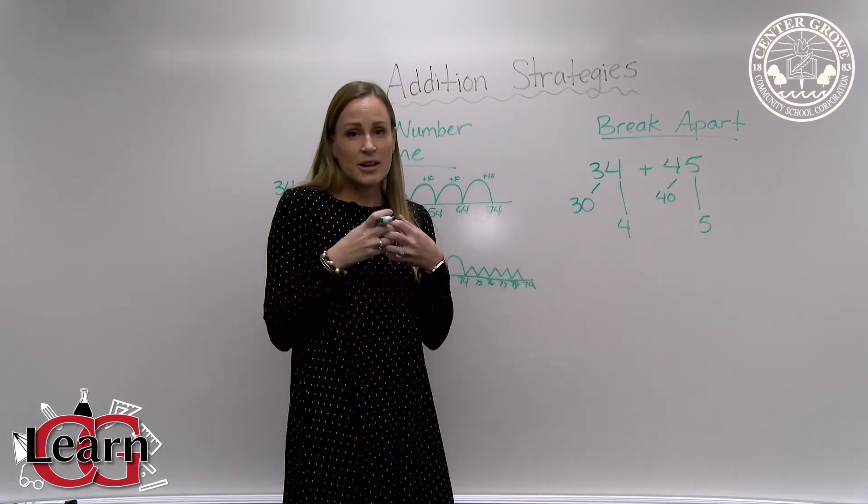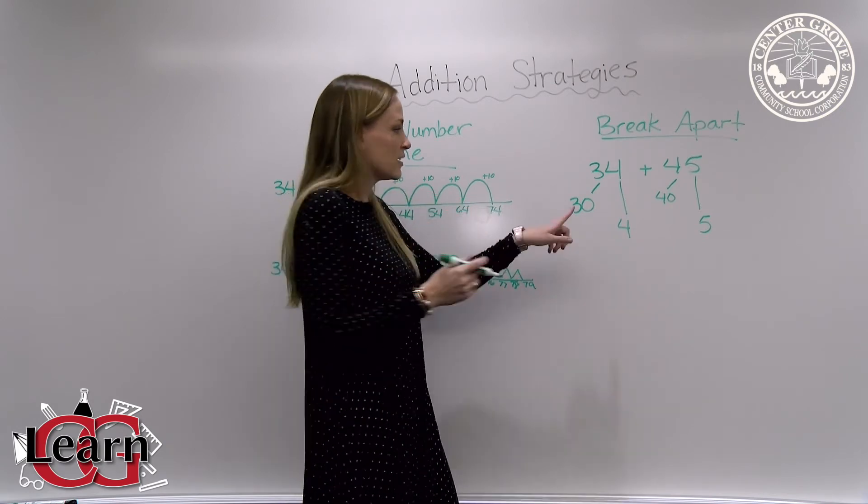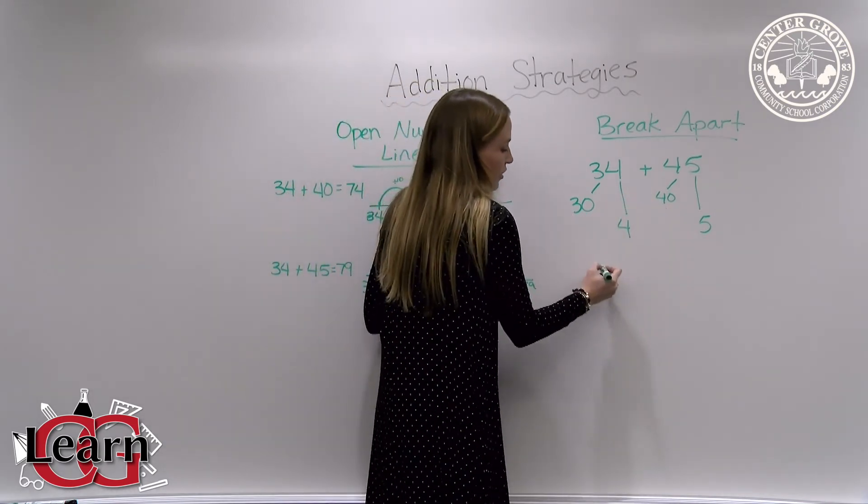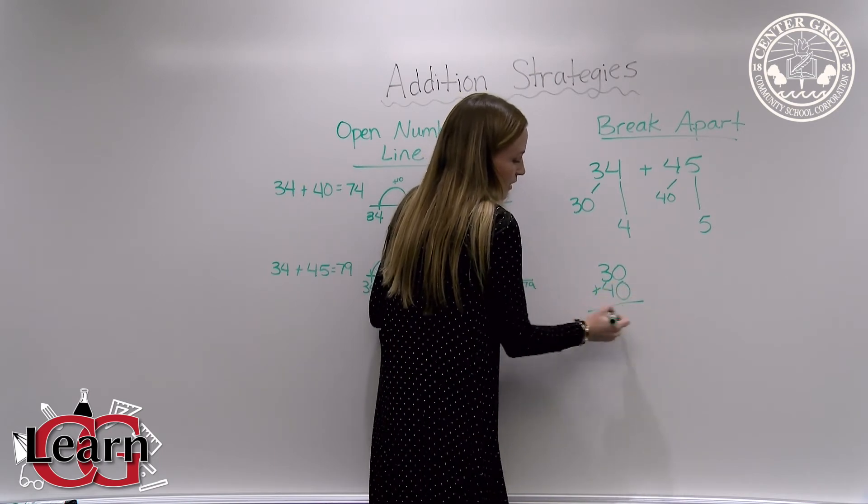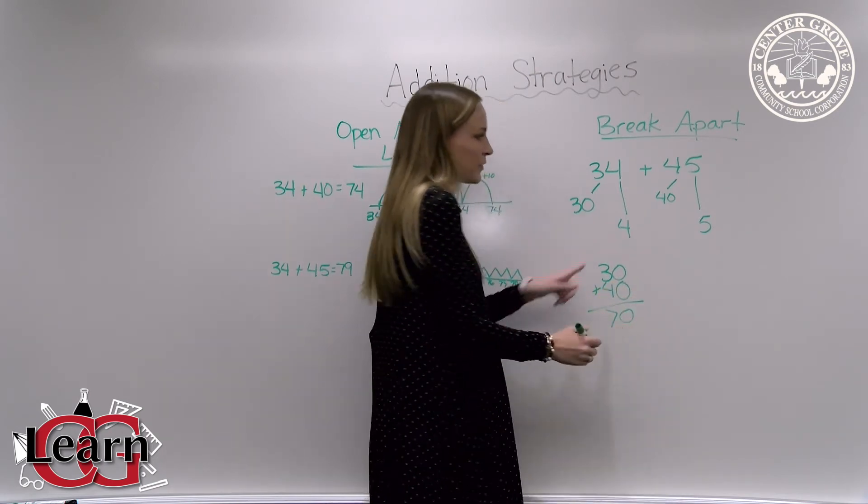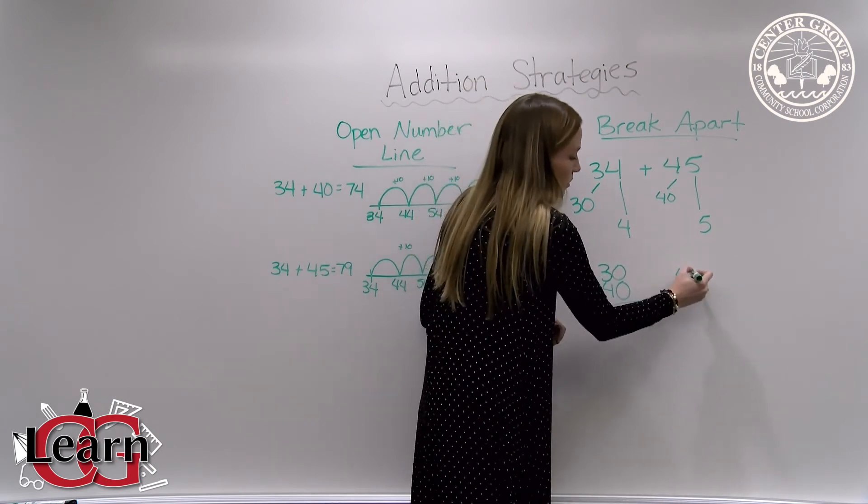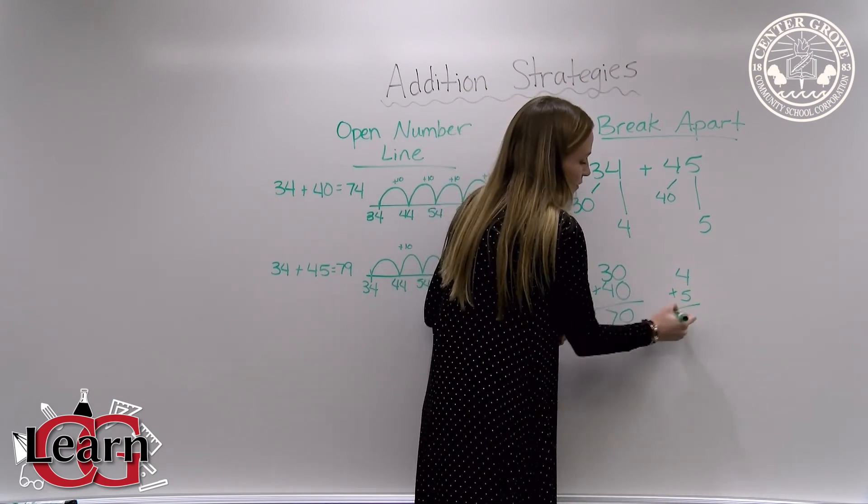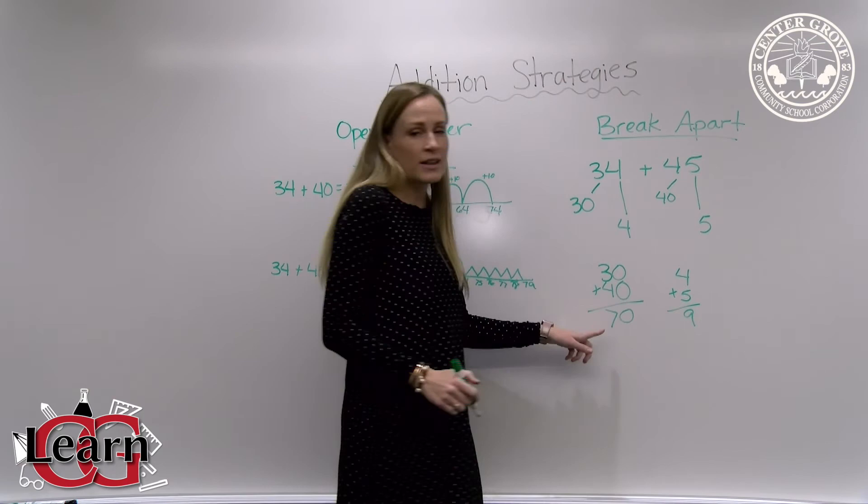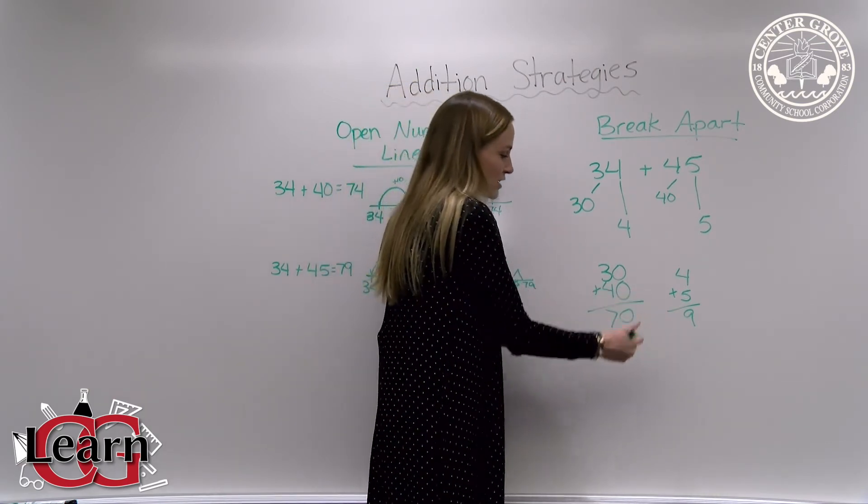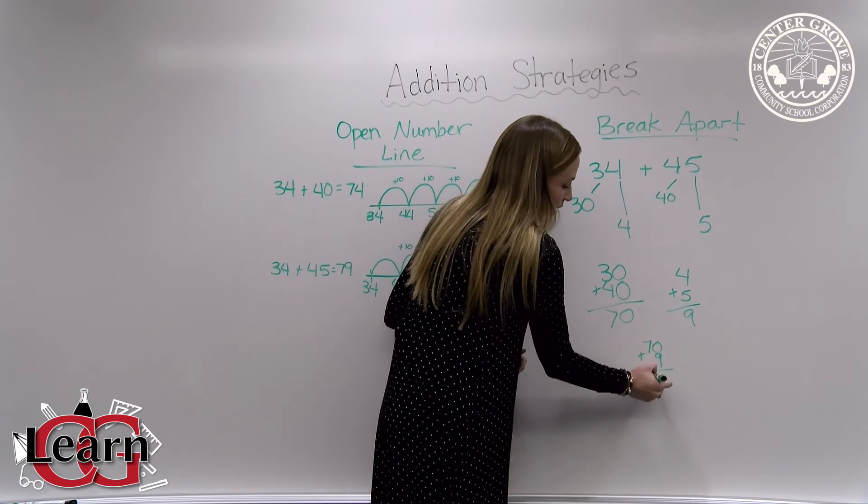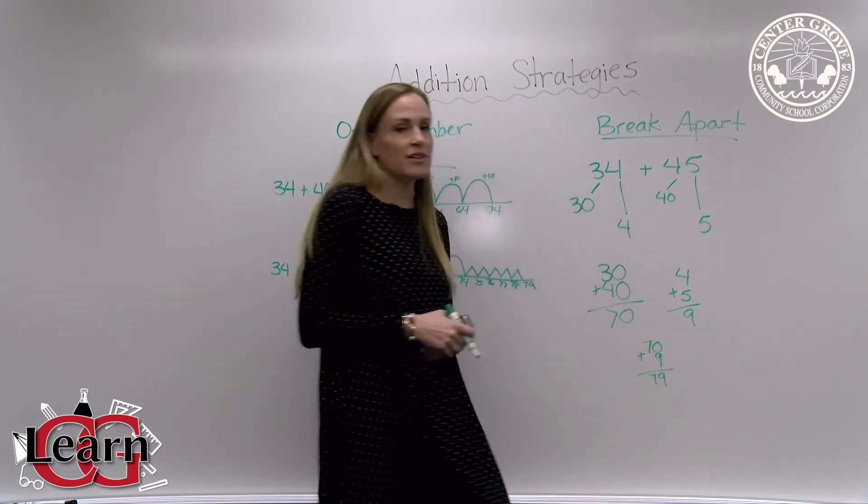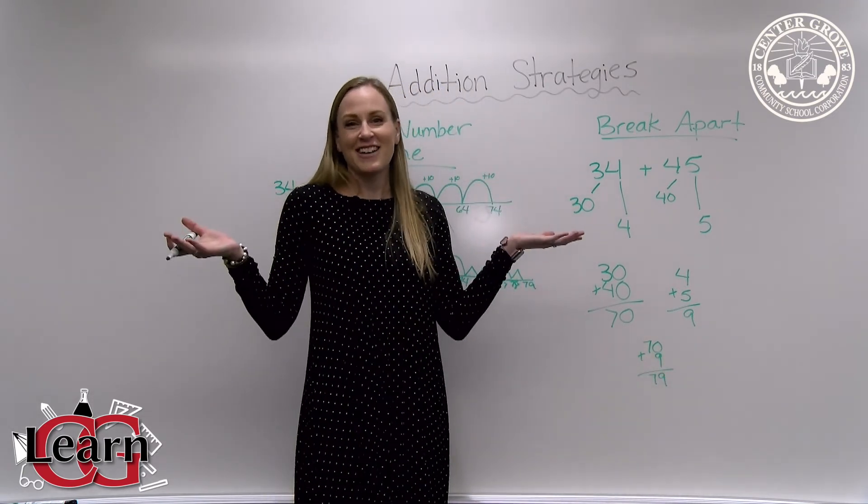Now you're going to combine your tens and your ones. You're going to add 30 plus 40 and you'll get 70. Now we're going to combine our ones. Four plus five equals nine. The last step is you put them all together. So you have 70 plus nine and it equals 79.